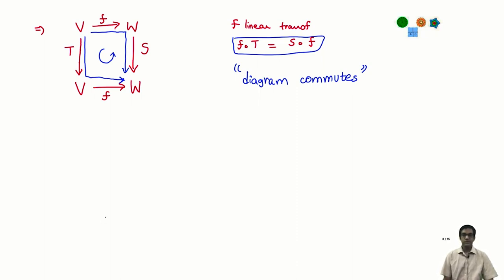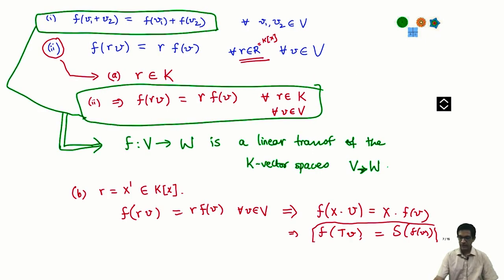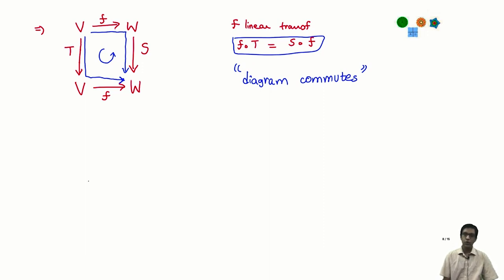This is really what a homomorphism is between two K[X]-modules: a linear transformation which makes this diagram commute, such that F ∘ T = S ∘ F. One might ask about other polynomials like X², X³, or 1 + X + X², but it turns out those do not add any more information.